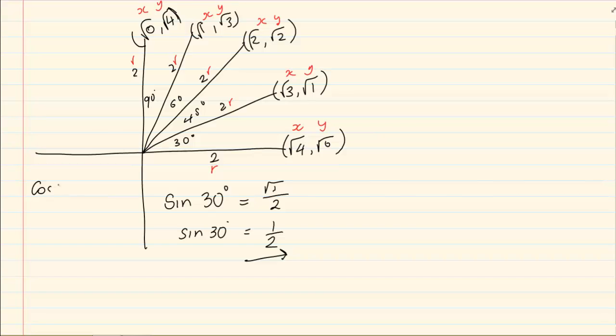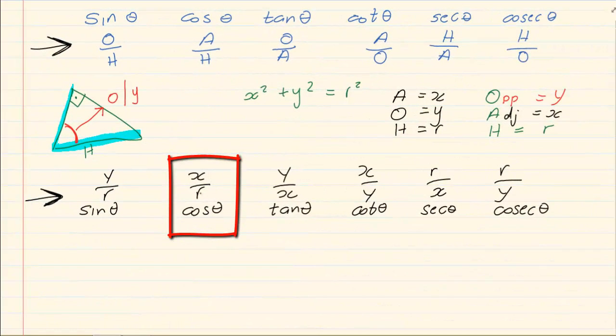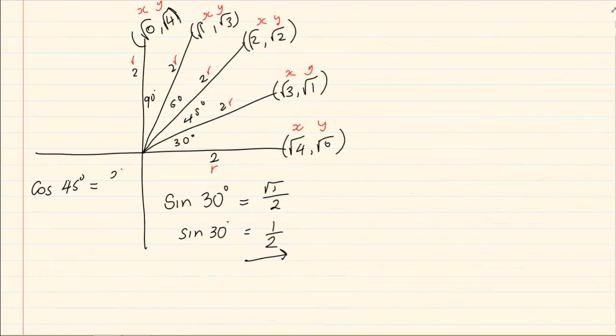Let's try cos of 45 degrees. Now we know cos is X over R. So we're going to go to our 45 degree line. The X is root of 2. The R is 2. So we've got root of 2 over 2. So cos of 45 is equal to root of 2 over 2.